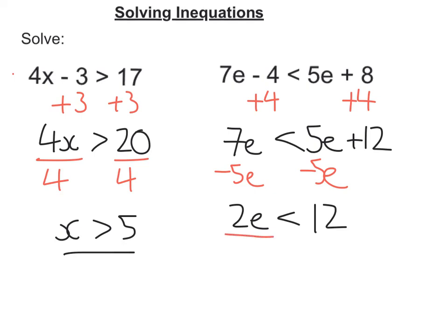Now divide by the number in front of the letter, so that's 2. We're going to get 2e divided by 2 is e, which is less than 12 divided by 2, which is 6. So e is less than 6.